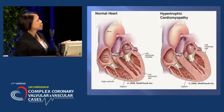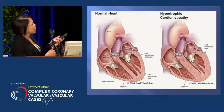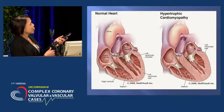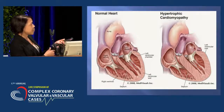This is just a depiction of a normal heart — you can see the ventricles are normal and the septum is normal. In hypertrophic cardiomyopathy, the septums are extremely large.